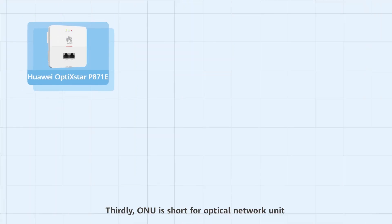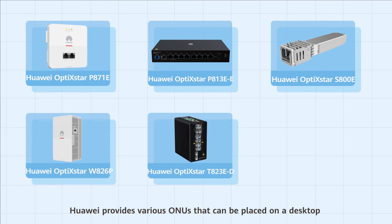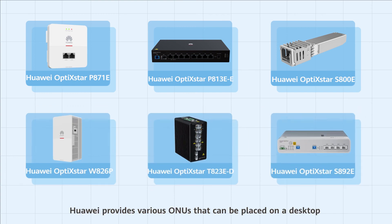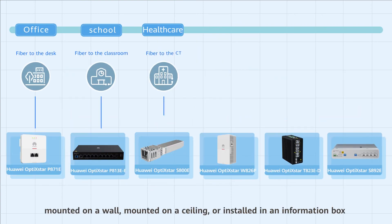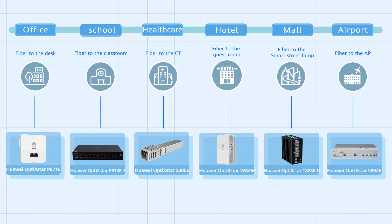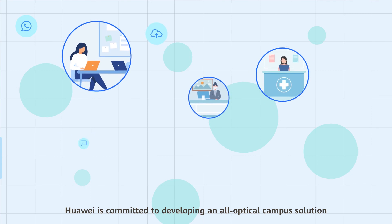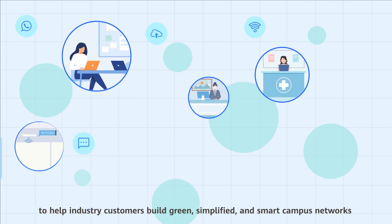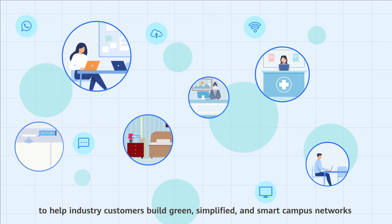Thirdly, ONU is short for Optical Network Unit. Huawei provides various ONUs that can be placed on a desktop, mounted on a wall, mounted on a ceiling, or installed in an information box. Huawei is committed to developing an all-optical campus solution to help industry customers build green, simplified, and smart campus networks.